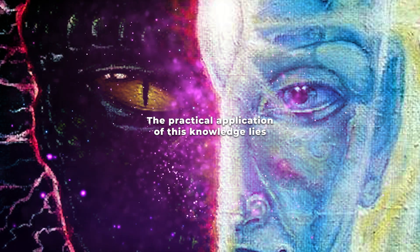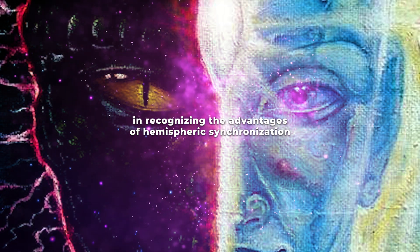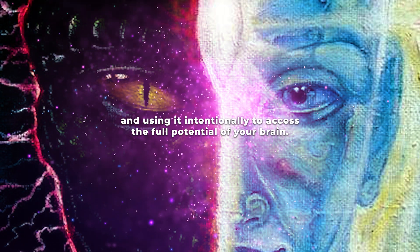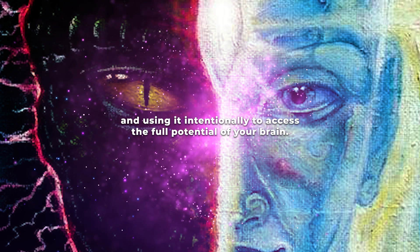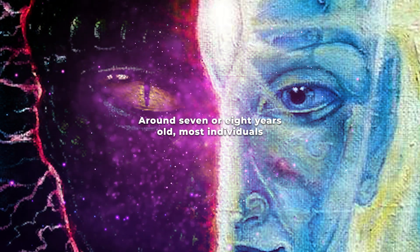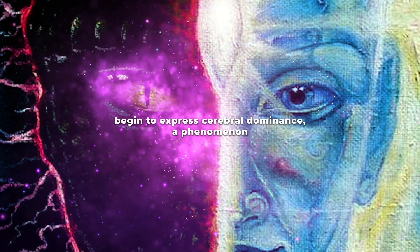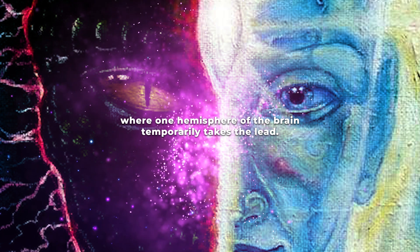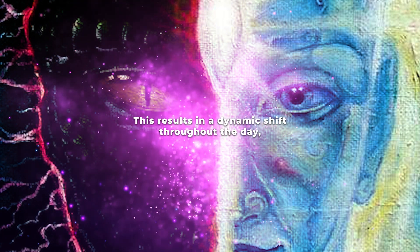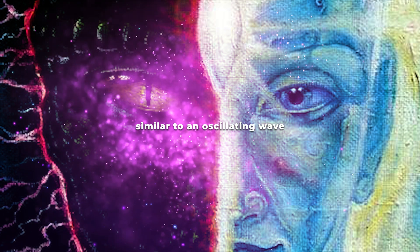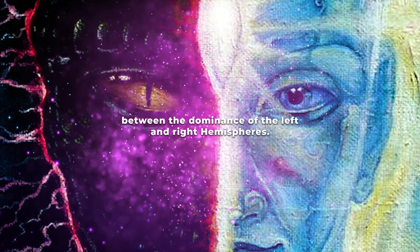The practical application of this knowledge lies in recognizing the advantages of hemispheric synchronization and using it intentionally to access the full potential of your brain. Around 7 or 8 years old, most individuals begin to express cerebral dominance, a phenomenon where one hemisphere of the brain temporarily takes the lead. This results in a dynamic shift throughout the day, similar to an oscillating wave between the dominance of the left and right hemispheres.